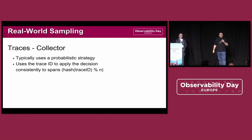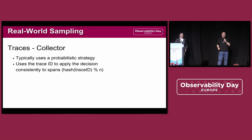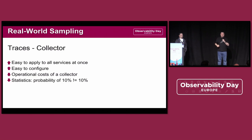We have a second strategy: sampling at the collector. There we can apply a decision consistently to all spans based on the trace ID — hash the trace ID, hash mod n, and make a consistent decision for all spans within the same trace. We have to keep the spans in memory to apply a decision, but the decision is consistent, though we have the same problem with probability.